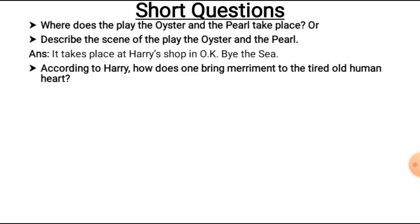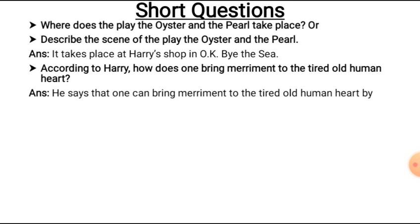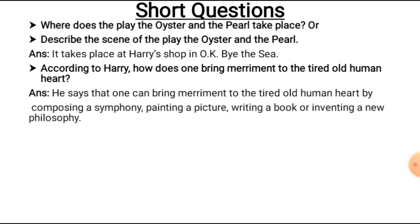Question number two: According to Harry, how does one bring merriment to the tired old human heart? Merriment means happiness. Harry says one can bring merriment to the tired old human heart by composing a symphony, painting a picture, writing a book, or inventing a new philosophy.